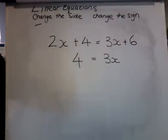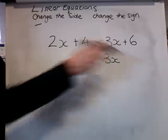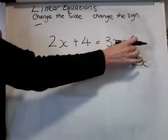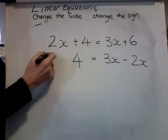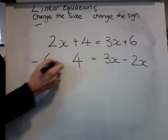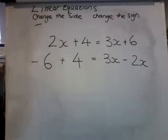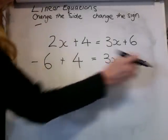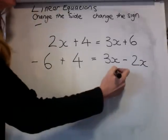Now we're going to swap them over. 2X needs to go over here. Change the side. Plus 6 needs to come over here. Change the side. On this side we have 3X take away 2X, which is X.